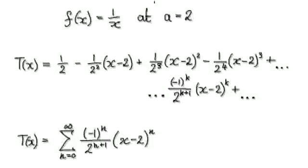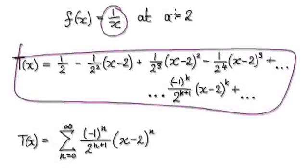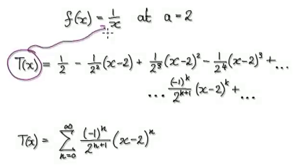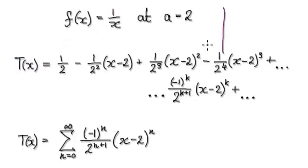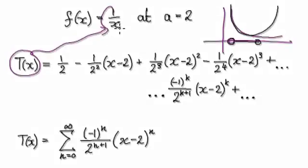Following on from the previous video, we worked out the Taylor series generated by the function 1 over x at a equals 2. In this video, we're going to find the interval of convergence for which the Taylor series will converge to 1 over x.